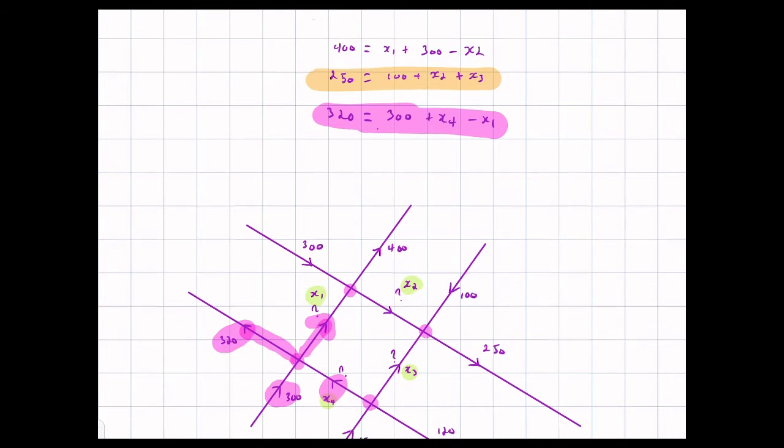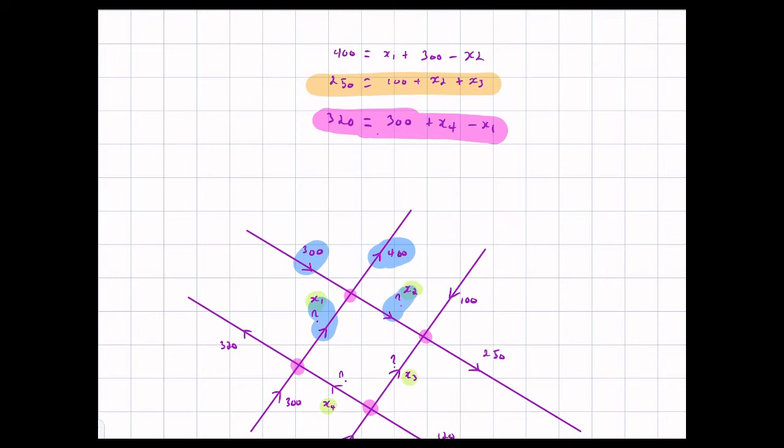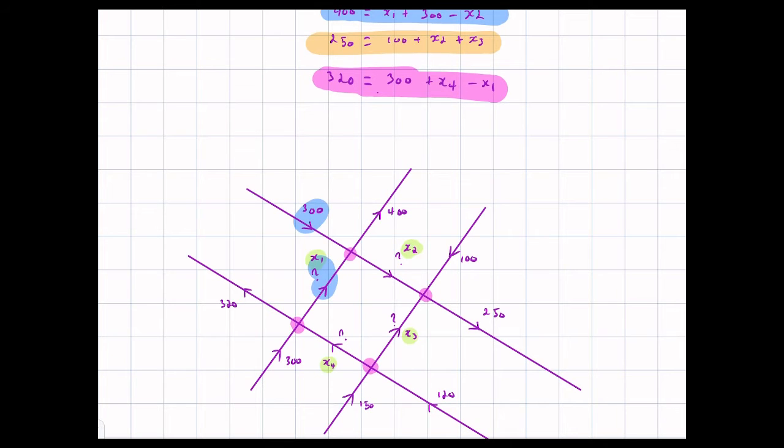320 is equal to 300 plus x4 minus x1. And then the last equation that I get is over here, 400 come out. How many went in? 300 plus x1 minus x2. Out of those 400, there were x1 coming in from that way, and then 300 coming in from the other way, and x2 gets siphoned off. So I get 400 being equal to x1 plus 300 minus x2. And so those are my three equations.